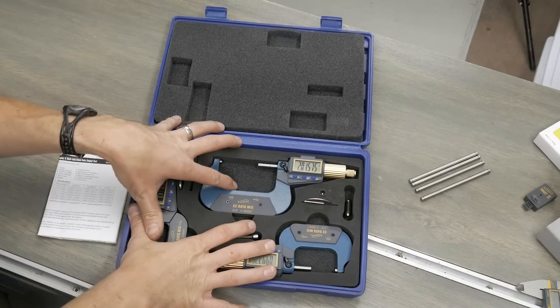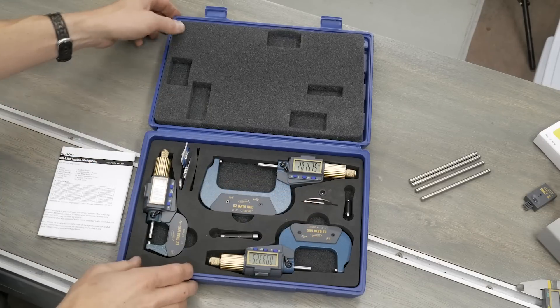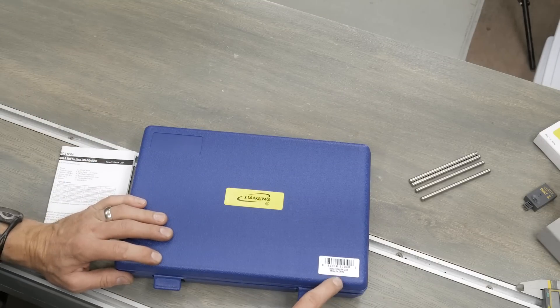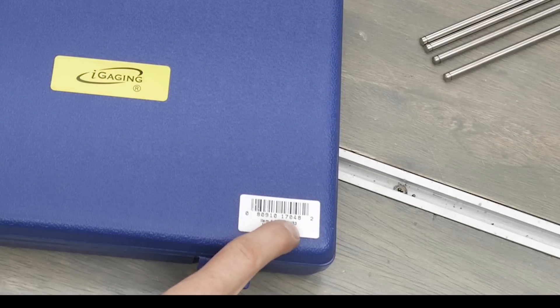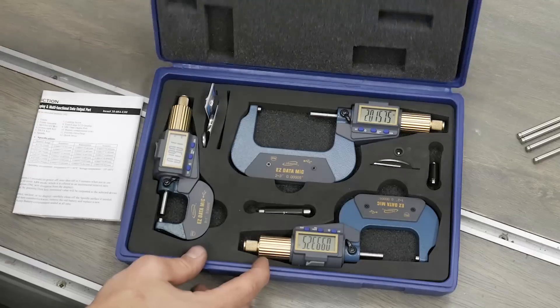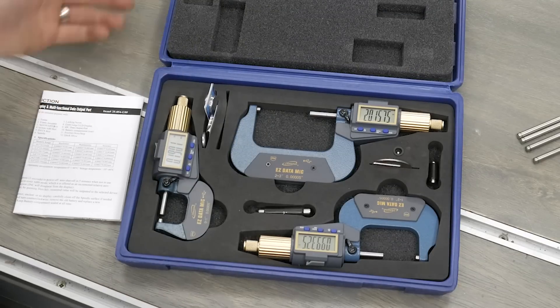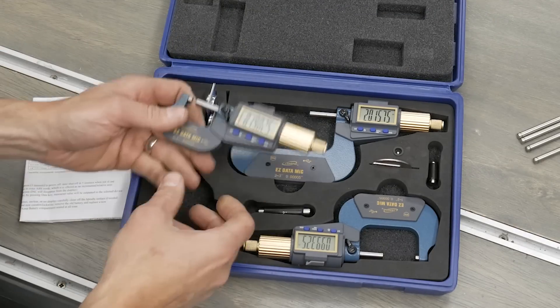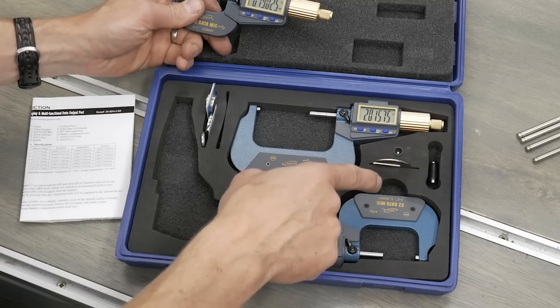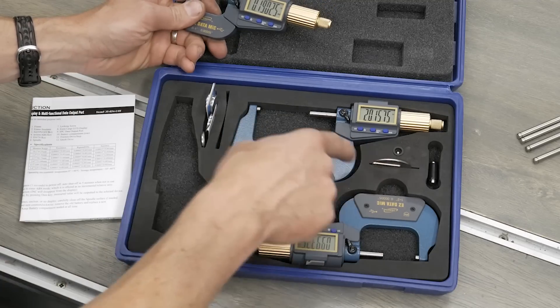So these Easy Data Micrometers are available individually or in sets. And what I've got here is the three-piece set, which is item number 35-054-U33. I'll have a link to the product in the full write-up, which is the first link in the video description. So this one has three micrometers: 0-1, 1-2, and 2-3.